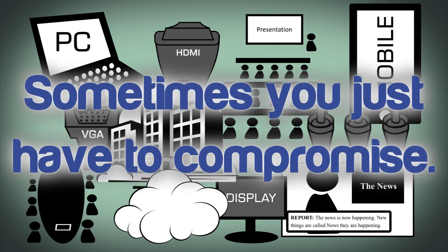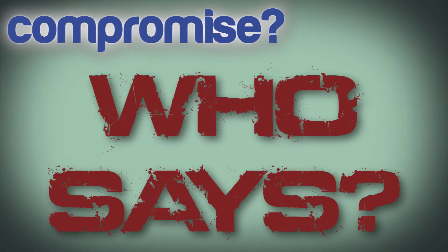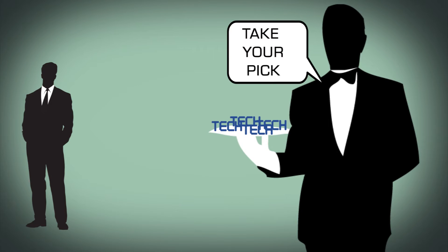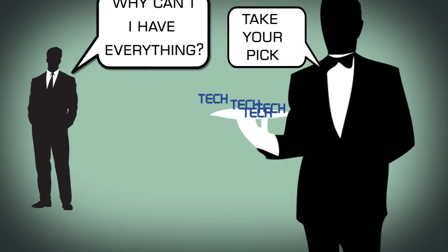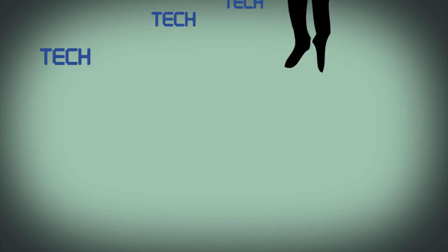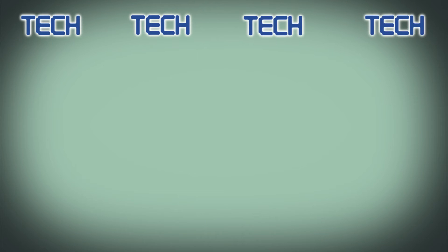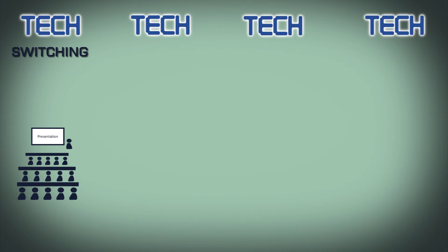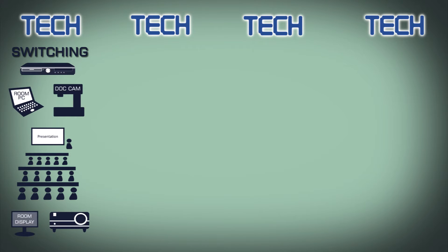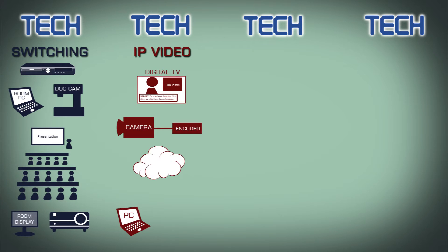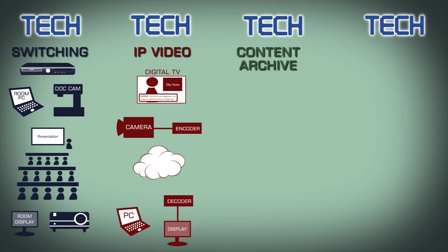Sometimes you just have to compromise — or do you? Okay, I guess you could get multiple systems and put them together. Maybe you could get a video switching system for your conference room — this would use traditional AV and would only have access to sources and displays in the switching network. Then you could have a distributed IP video system that could tap into live sources like digital television and cameras running through encoders.